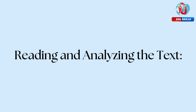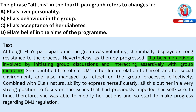Now, let's review the text. The paragraph tells us that although Ella was initially resistant, she became more actively involved as time went on. She began initiating discussions, interacting assertively with others, reflecting on her condition and the group's processes, and aligning her actions to manage DM1 better. These actions — her involvement, discussions, and reflections — all combined with her ability to express herself, helped her focus on the self-care issues she'd struggled with before.